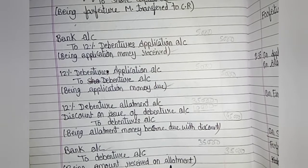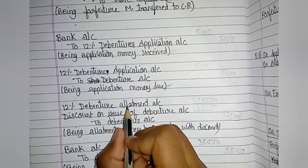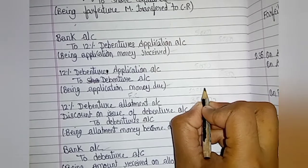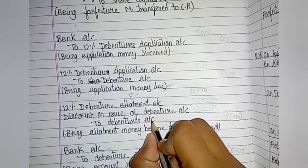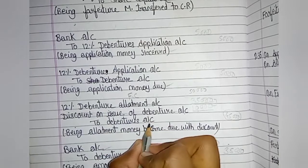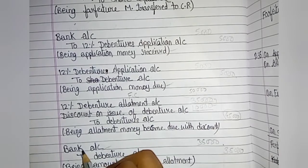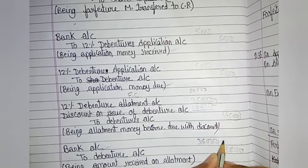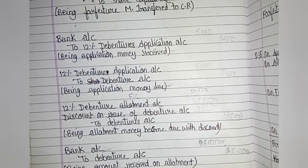Now the first call entries. Due entry: 12% Debentures First Call Account debit Rs. 50,000 — no discount entry here — To Debentures Account credit Rs. 50,000. Narration: being first call money due. Received entry: Bank Account debit, To 12% Debentures First Call Account credit Rs. 50,000. Narration: being first call money received. This completes all the journal entries.